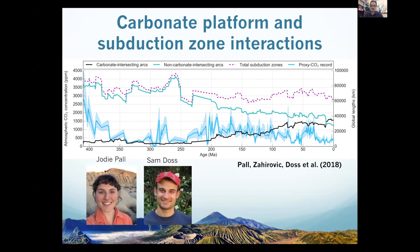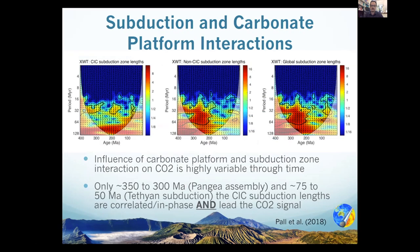Here is time on the X-axis from 400 million years to the present. In blue is atmospheric CO2, and the black line is the carbonate intersecting continental arcs. It's very difficult to visually see these relationships directly, so we used numerical approaches such as cross-wavelet transforms to compare two time series — one being the atmospheric CO2 and the other these interactions between subduction zones and carbonate platforms — to give us an idea of when interactions at subduction zones may be important to atmospheric CO2.